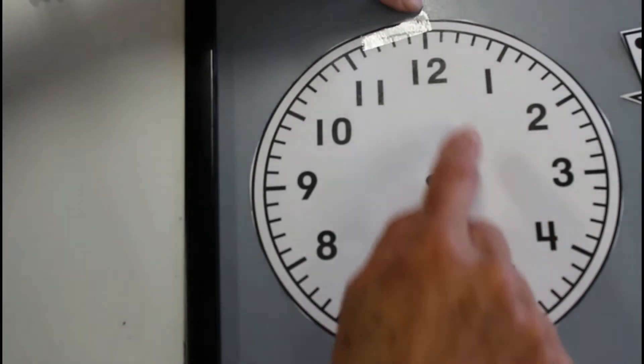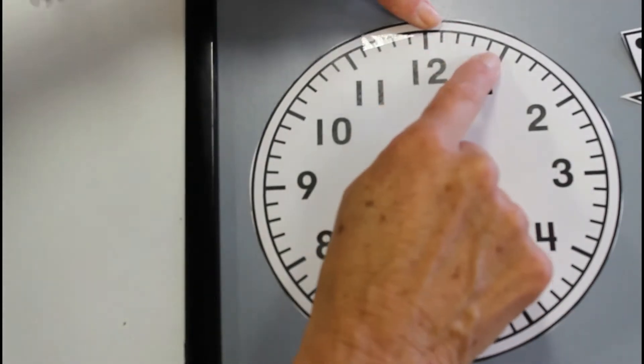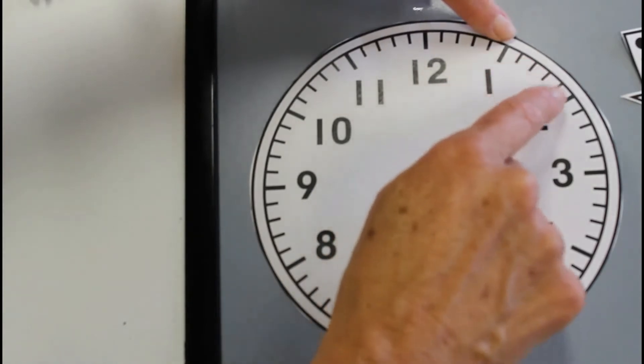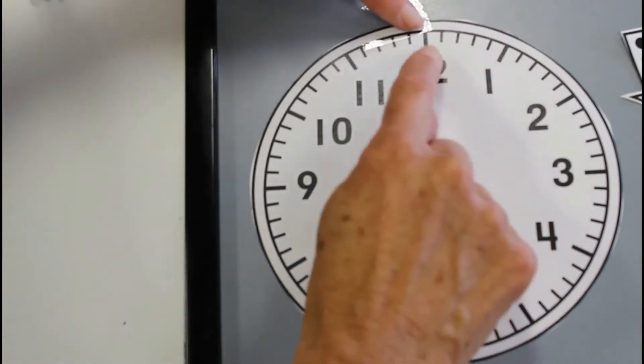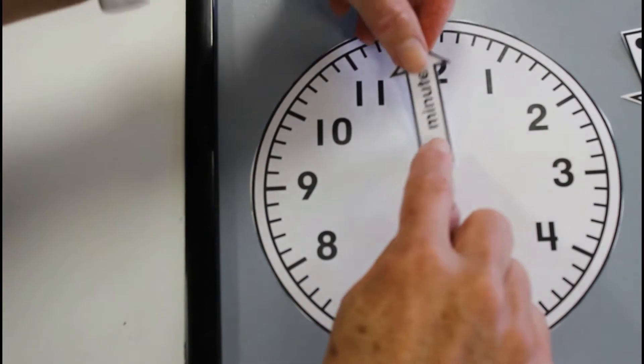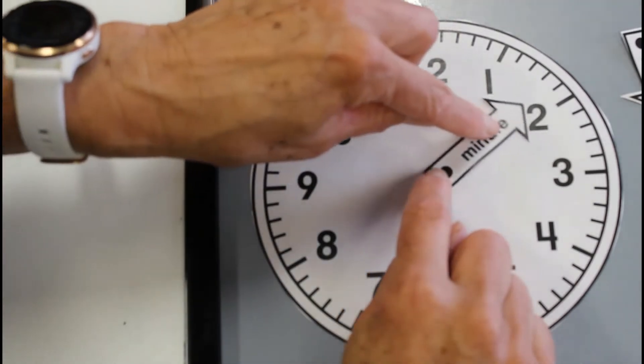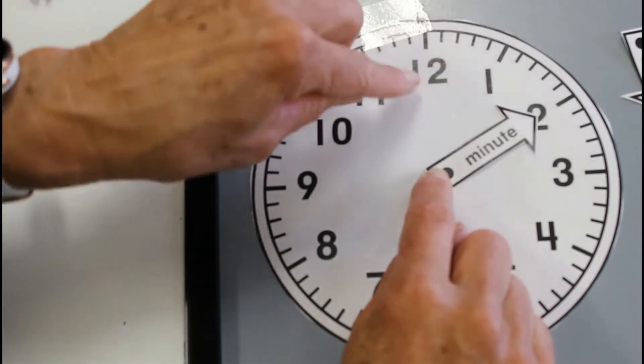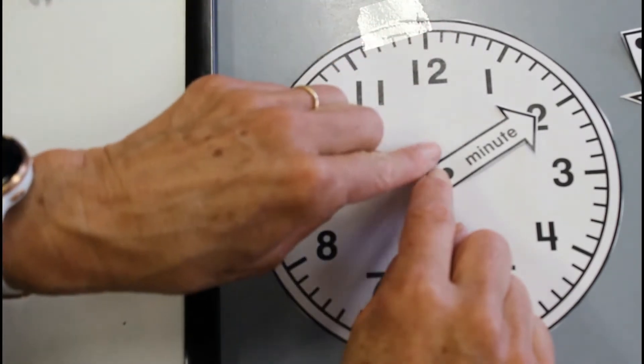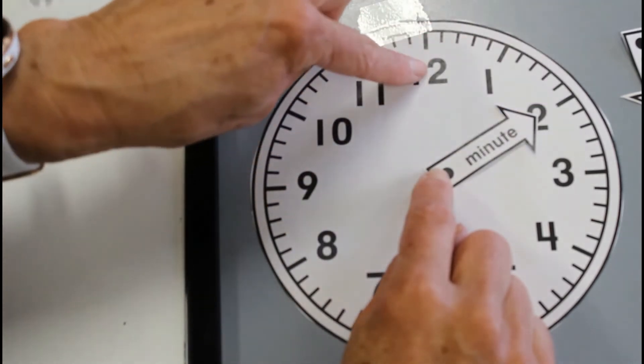But how we read them is this is five, six, seven, eight, nine, ten. We know this is ten minutes past. So if the minute hand has moved from the twelve and moved around to the two, we know that it has gone ten minutes past the twelve.